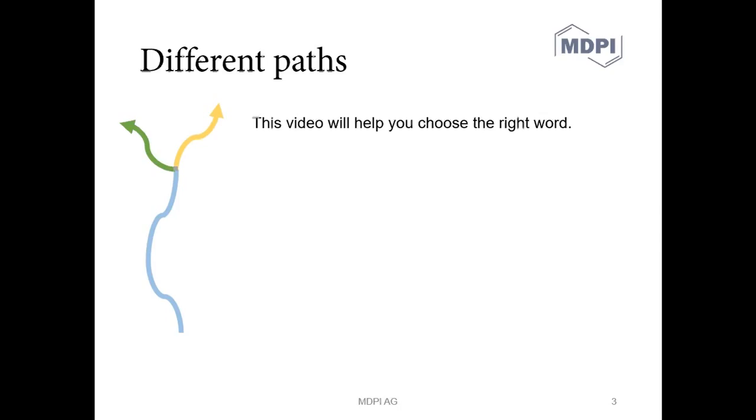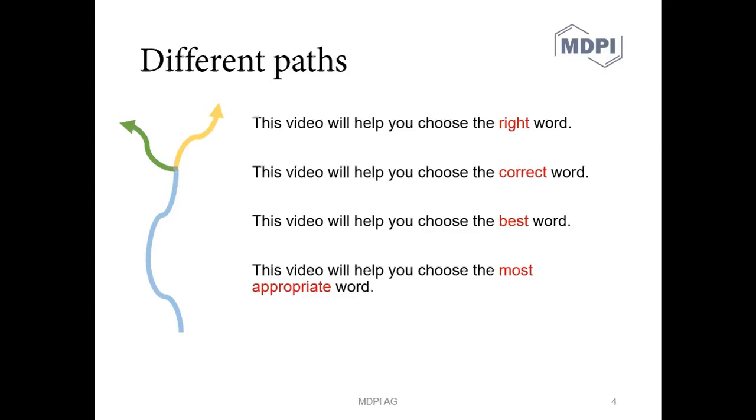Hopefully this video will help you choose the right words. And there's a phrase in English that says there's more than one way to skin a cat. In other words, you can choose more than one word when you're writing something. So it might help you choose the right word, the correct word, the best word, the most appropriate word. There's a slight difference in the meaning of each of these four examples but any of them are equally valid. And it might depend a little bit on the context as to which one you choose.